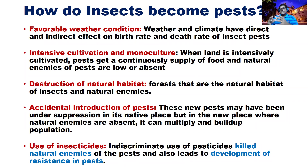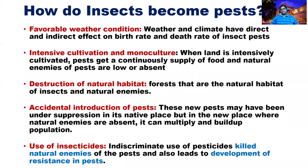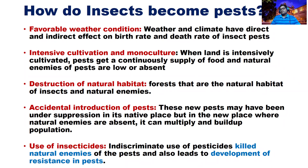When humans started cultivating certain crops needed for food as a monocrop, food became abundant. Insects were attracted because food was abundant. They came, ate, multiplied, and the insect population increased. When insect population increased, damage was very high. This created famine, so humans thought they could invent something to manage these pests — they invented chemicals.